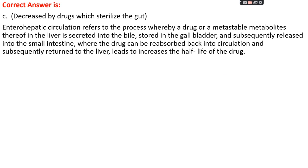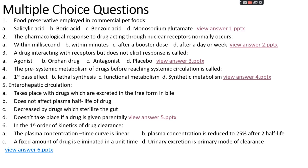Enterohepatic circulation refers to the process whereby a drug or metabolite thereof is secreted by the liver into bile, stored in the gallbladder, subsequently released into the small intestine, broken down, and reabsorbed back into circulation, returning to the liver. This leads to an increased half-life of the drug. This condition is known as enterohepatic circulation.